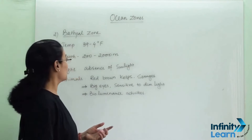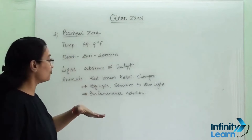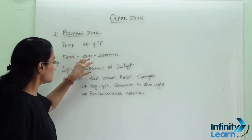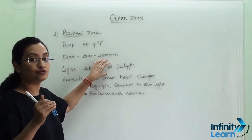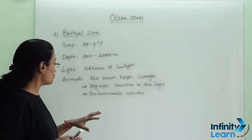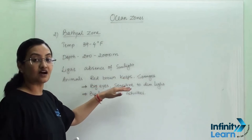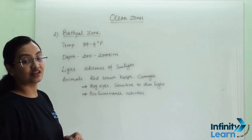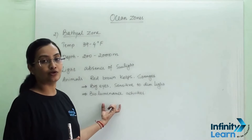Our second zone is the bathyal zone. This zone's temperature is 39 to 4 degrees Fahrenheit. This zone comes after the euphotic zone; its depth is 200 to 2000 meters, and there is a complete absence of sunlight because sunlight cannot reach depths beyond 200 meters. The animals living in this zone include red-brown kelps and sponges. They have big eyes that are sensitive to dim light, and we can see bioluminescent activities in this zone due to the total absence of light.